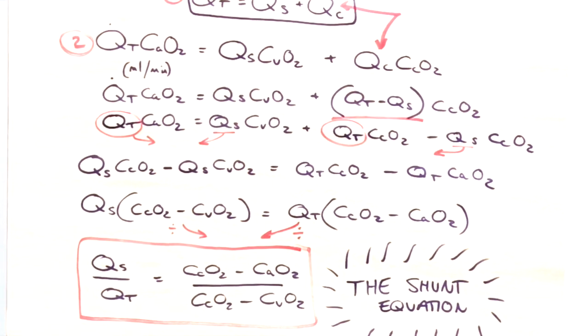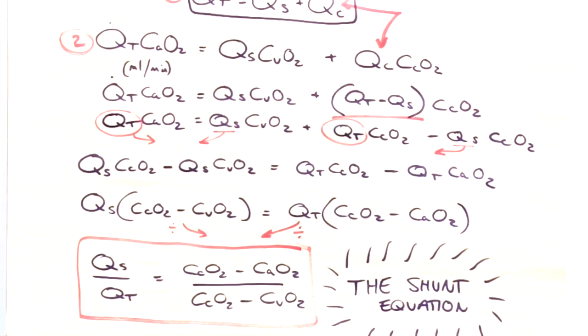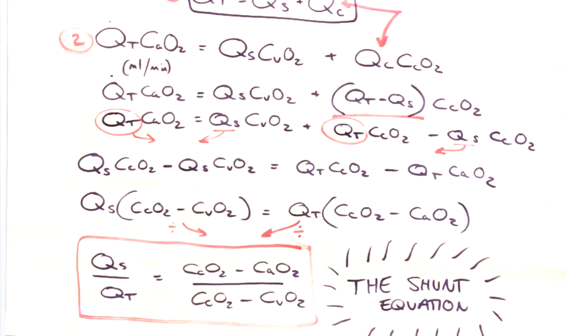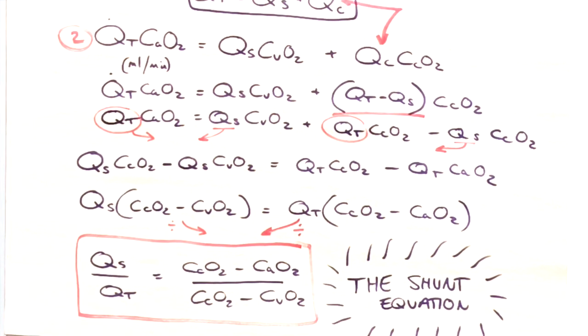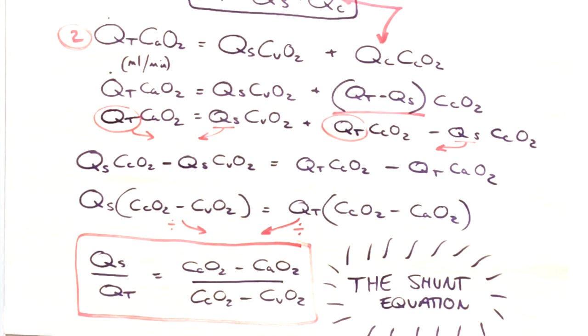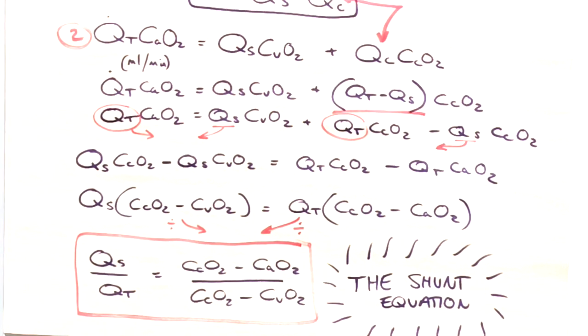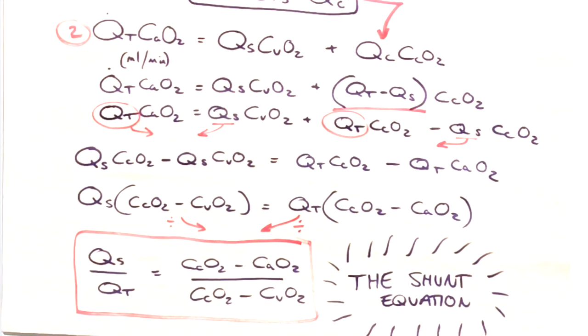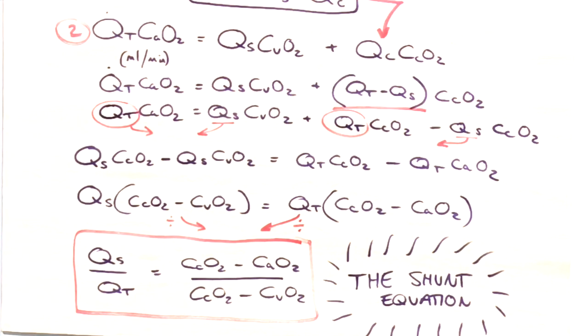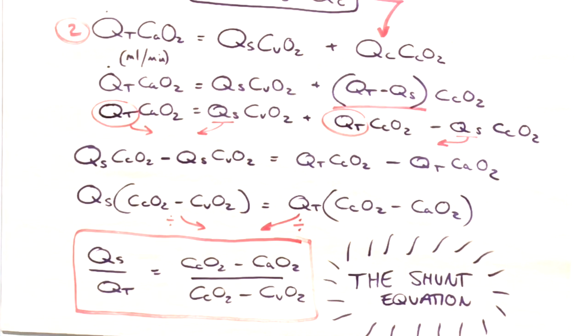Now a lot of people will just memorize the shunt equation and that works for the exam, but you do run the risk of mixing up the terms, especially the Cc, the Cv, and the Ca terms. If you just try and remember that the CcO2 is the biggest oxygen content because that's the one that's picked up all the blood from the alveoli, so that one has to be at the front because you're having to minus the other terms from it.